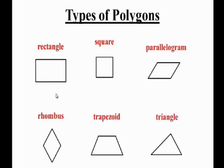The first one, here, is a rectangle. The second one is a square. This is a parallelogram.